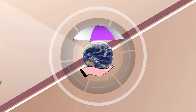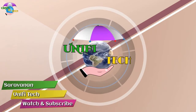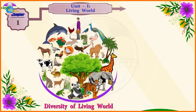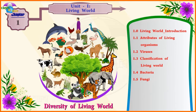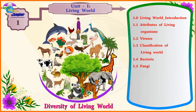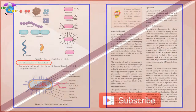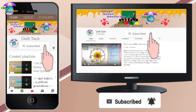Hi students, I am your Saravanan. This is Unified Tech. Chapter 1 – Living World, Unit 1 – Diversity of Living World. 1.4.3 – Ultrastructure of a Bacterial Cell. If you haven't subscribed to our channel, subscribe now and click the bell icon for notifications.